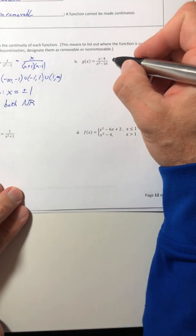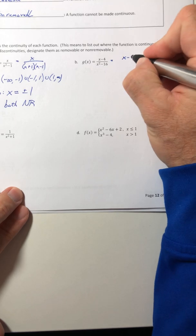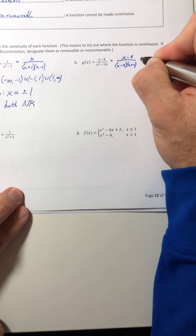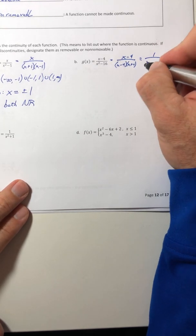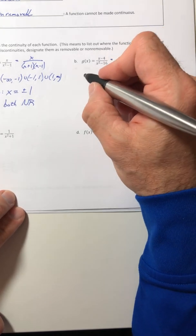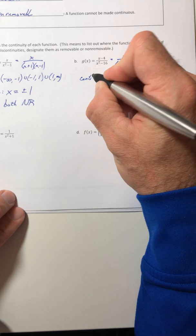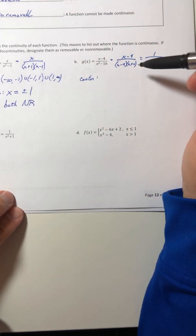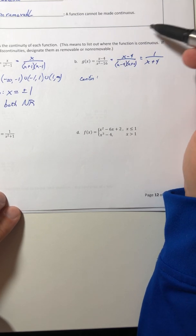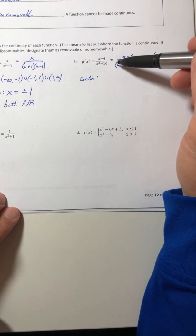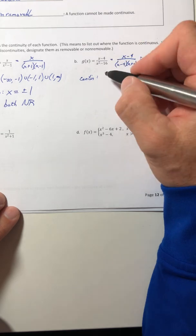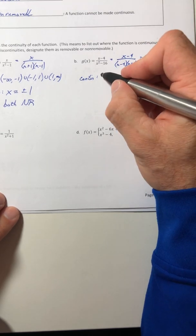Now with part B, you can factor that down. And now something does simplify, or something did get removed. So let's talk about the continuity first, and then we'll do the discontinuities later. The continuity is always going to come from the original function, not what you simplified into. We're going to look at this one to get the continuity, which would be leaving out the positive and negative 4.